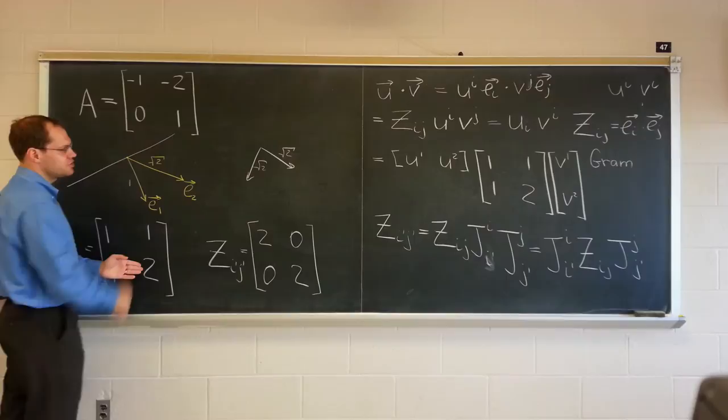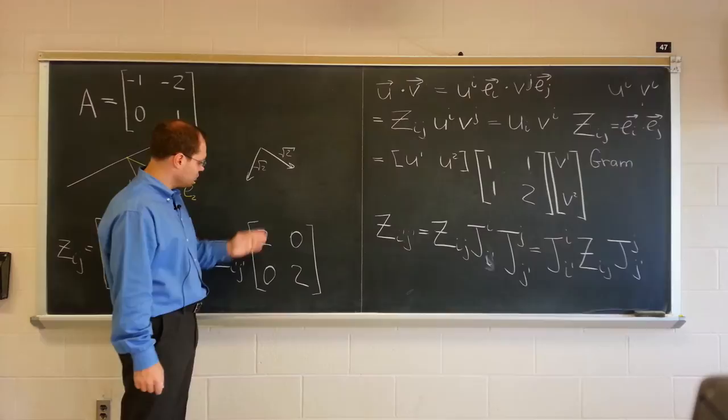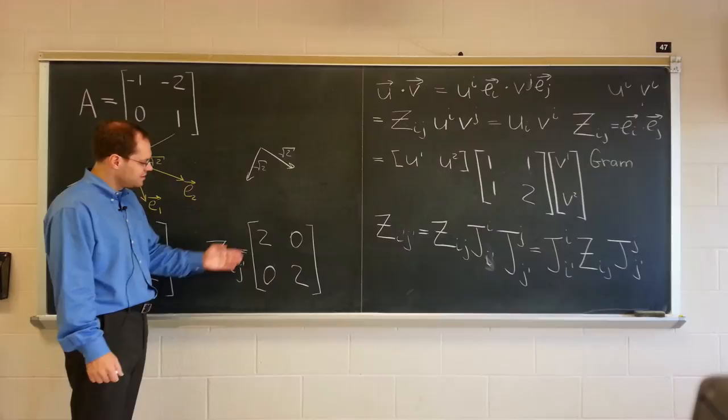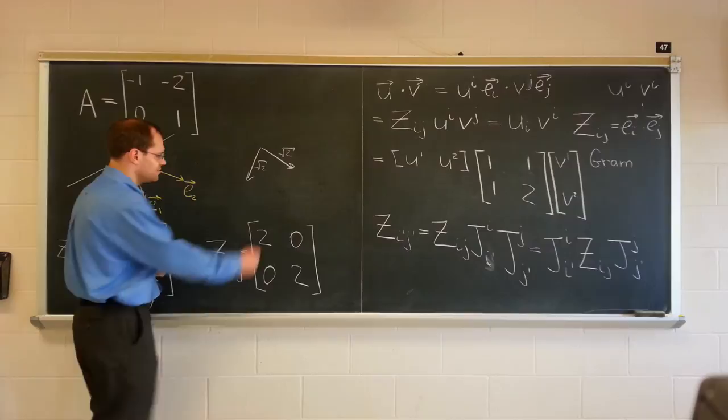This of course is also 1 and this is e2 dotted with e2. And if we recall our new basis, which looks like this. Of course the metric tensor, that's all it is. Is 2, 0, 0, 2. That's this guy dotted with itself.